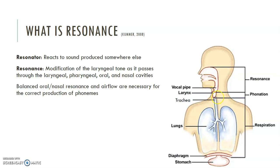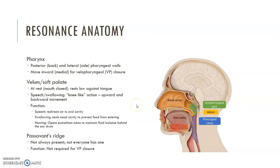So we have the generator, the lungs; the vibrator, the vocal folds; and the resonators: the larynx, pharynx, oral, and nasal cavities. If we isolate it to the head and neck for the resonators, we have the superior portion of the larynx — the area above the vocal folds or supraglottic area. We have the pharyngeal cavity, and in this picture you'll see the posterior pharyngeal wall as well as one lateral or side of the pharyngeal walls. It creates a U-shape on the back and sides of the throat.